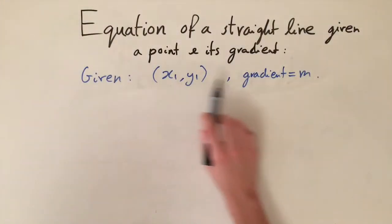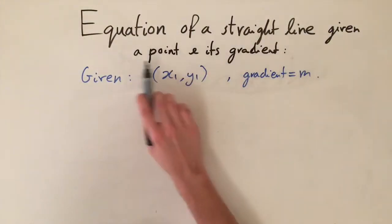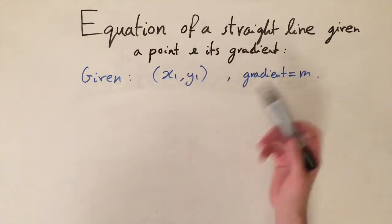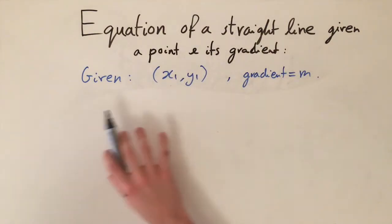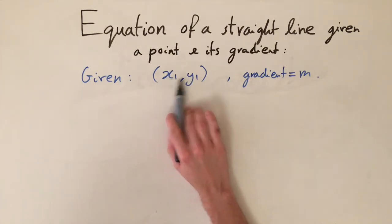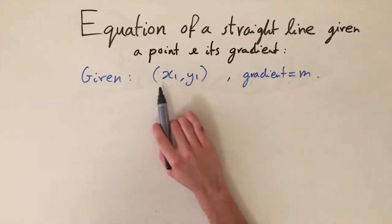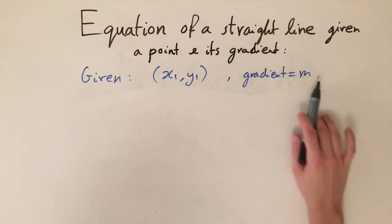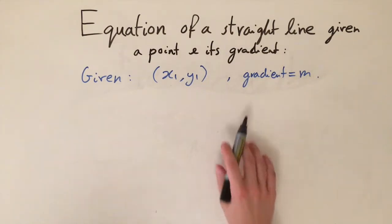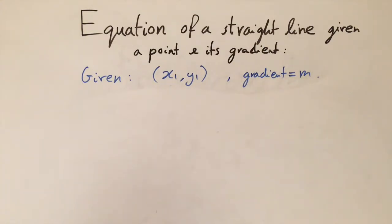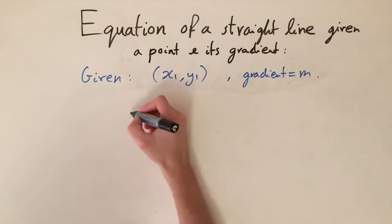In this video we're going to be looking at finding the equation of a straight line given a point and given its gradient. The problem is set up like this: we are given a point with an x-coordinate and a y-coordinate, which we'll label x1 and y1, and we're also given the gradient. From this information we want to work out the equation of the line. Conveniently, there is a formula to do this.